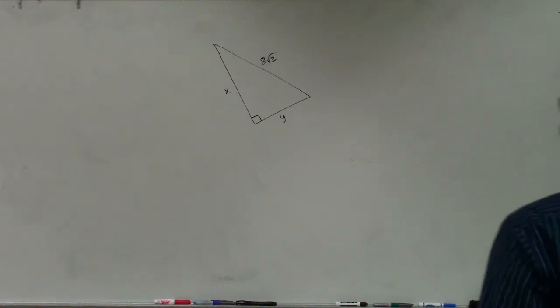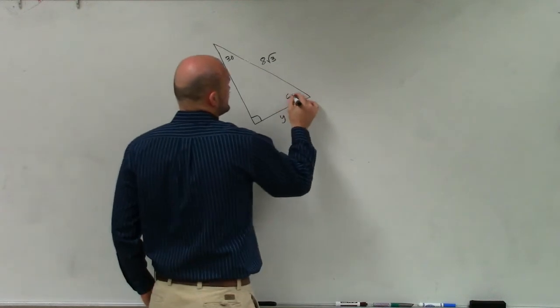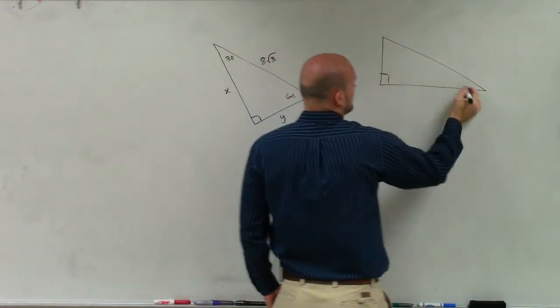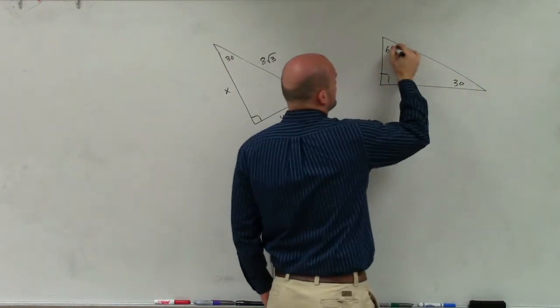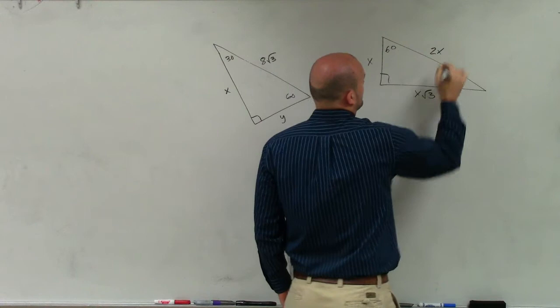If we know that 30-60-90 triangle, the way that we related it. So this is 30, that's 60, and here's exactly what I did in the homework quiz. The same thing, right?